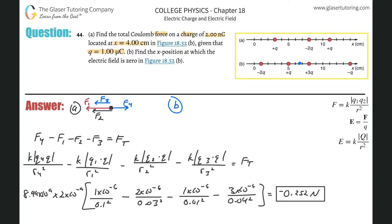I'm going to take a guess somewhere in here. I'm going to use this total distance. The total distance from 1 to 14 is 13 centimeters, so 0.13 meters. I'm going to make my X from the leftmost charge. We know that the electric field at this particular point has to be zero. So let me label the charges: this will be 1, 2, 3, and this one will be 4.